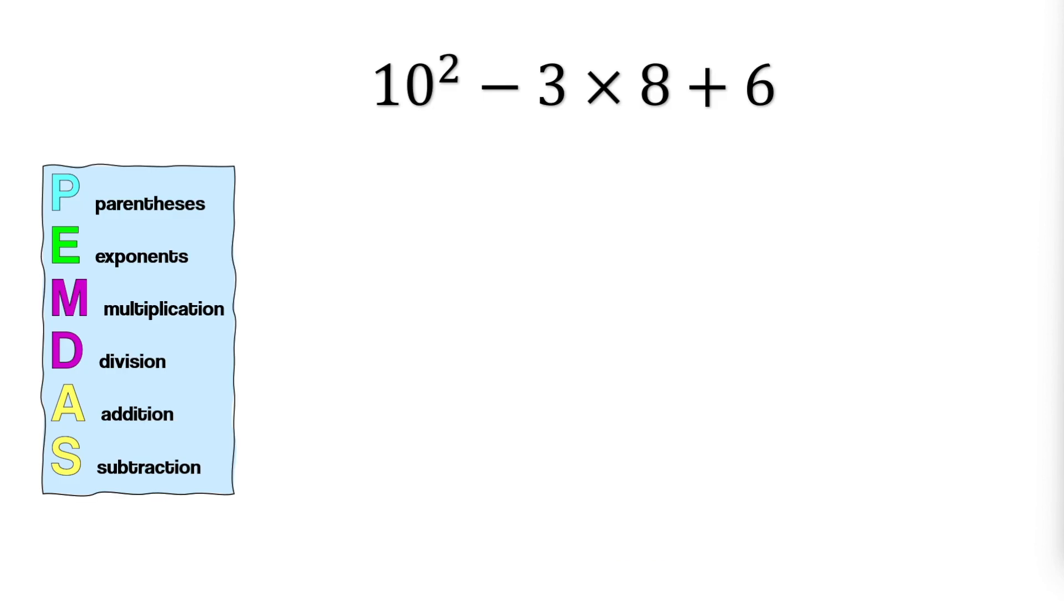Let's do some examples. In this problem, since there are no parentheses, we proceed directly to exponents. We have 10 squared, which means 10 times 10, resulting in 100. Bring down everything else.